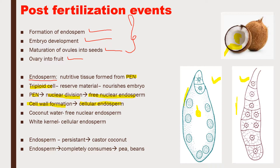The endosperm may either be completely consumed or it may be persistent. If it is persistent, this can be seen in castor and coconut. If it is completely consumed by the developing embryo, this can be seen in pea and beans. These can also be called endospermic seed and non-endospermic seed.